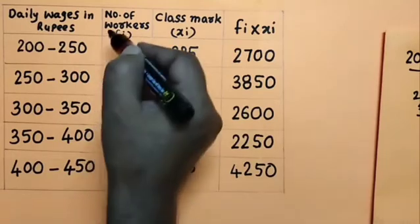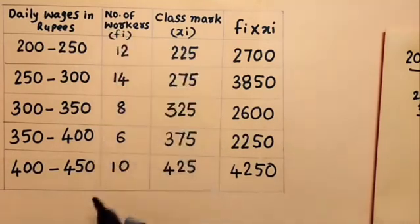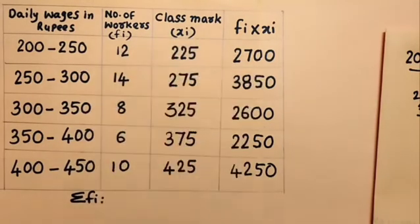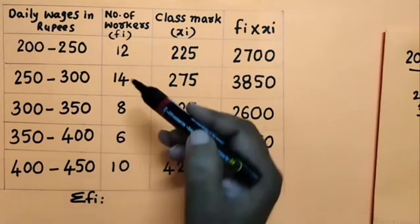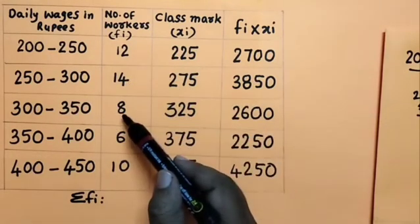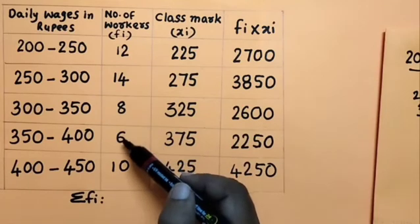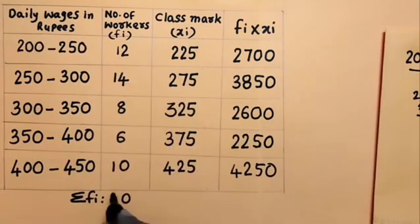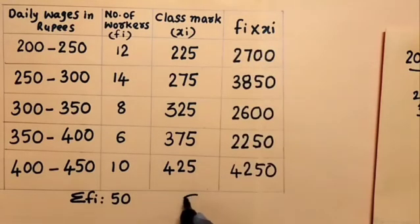Now add the total frequency: the summation of fi is 50. Similarly, the summation of fi×xi is calculated to be 15,650.